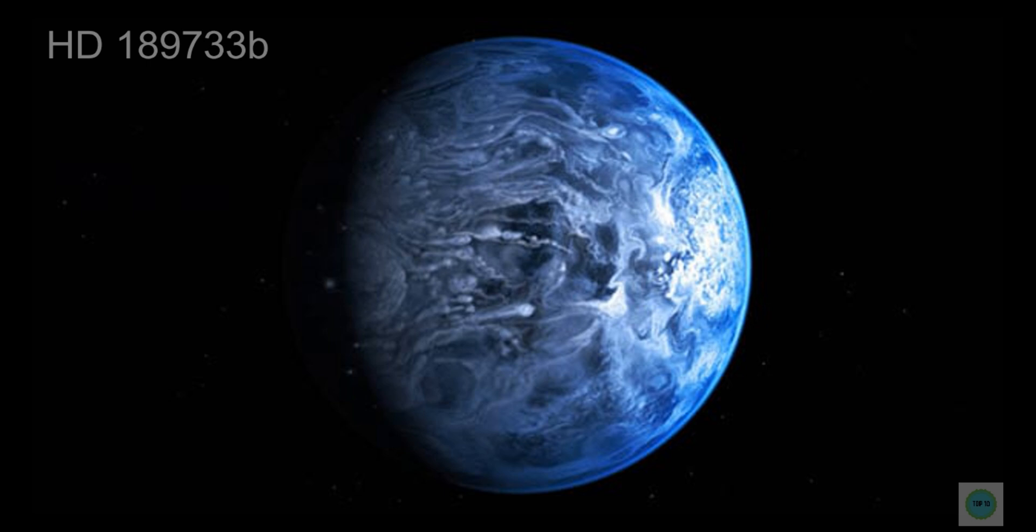Interestingly, a day on this exoplanet is also 2.2 Earth days long. The gravitational interaction between a planet and its star can make a planet have a day and year of the same length if the planet becomes tidally locked to its star, just as our moon is tidally locked to the Earth. This means that the planet rotates on its axis in the same amount of time that it takes to complete one revolution around its star. Rotations cause days and nights, and revolutions cause years.